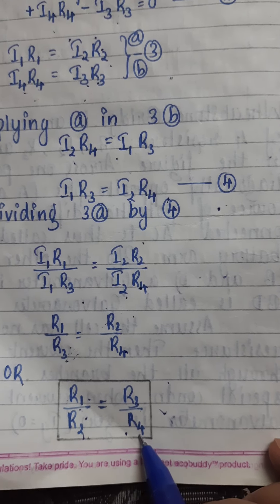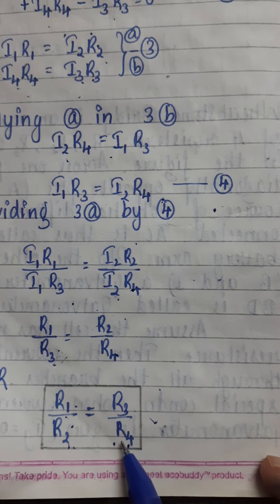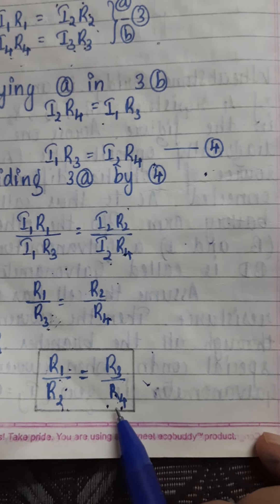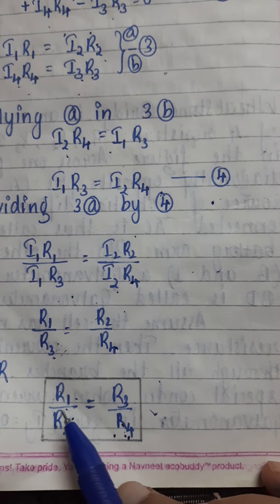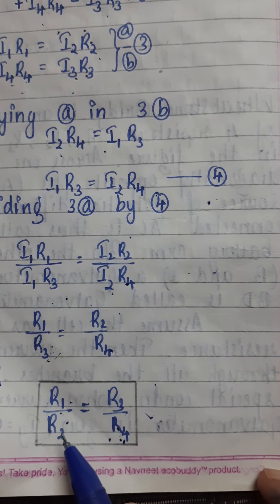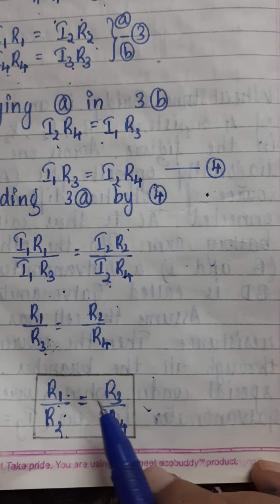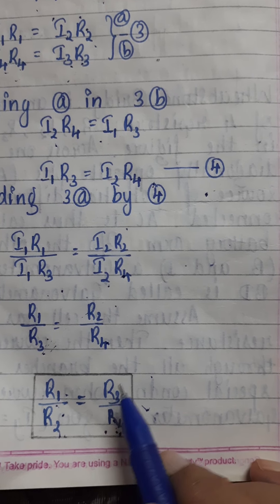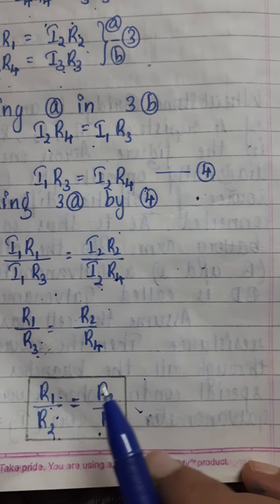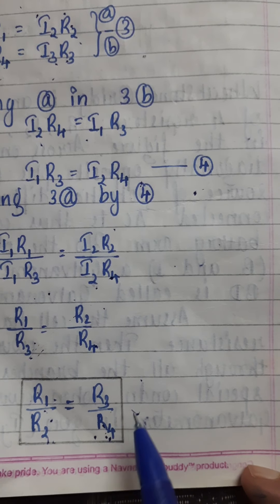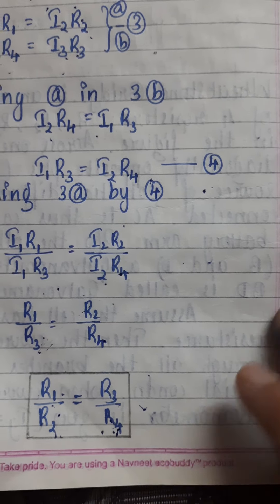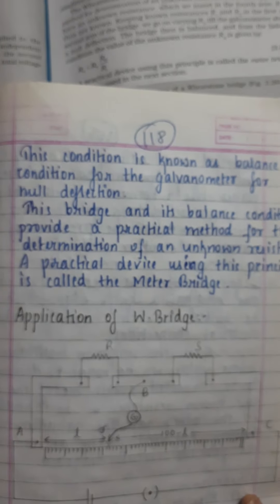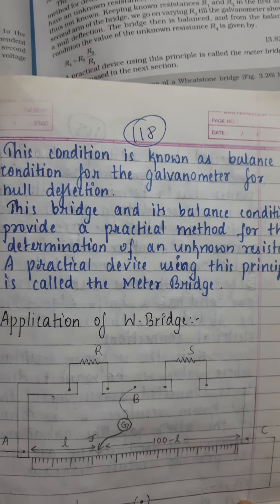Since the ratios are equal, if you place an unknown resistance at R4's position and adjust R3 such that null deflection is achieved — keeping R1 and R2 as known resistors — you can calculate the value of R4 using this formula. This is how Wheatstone Bridge determines unknown resistance.